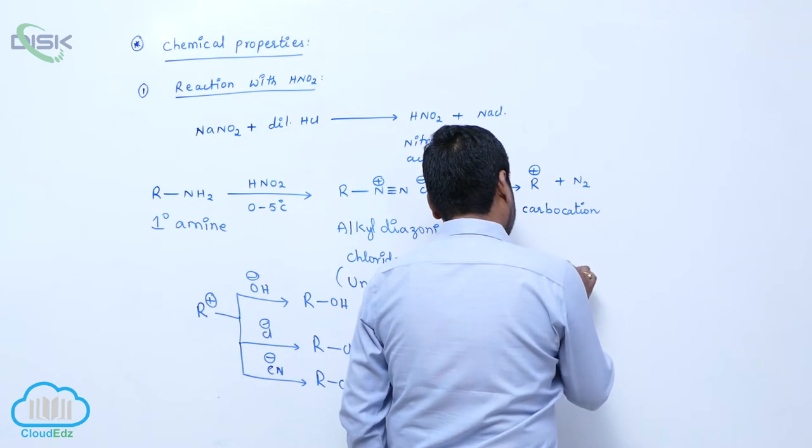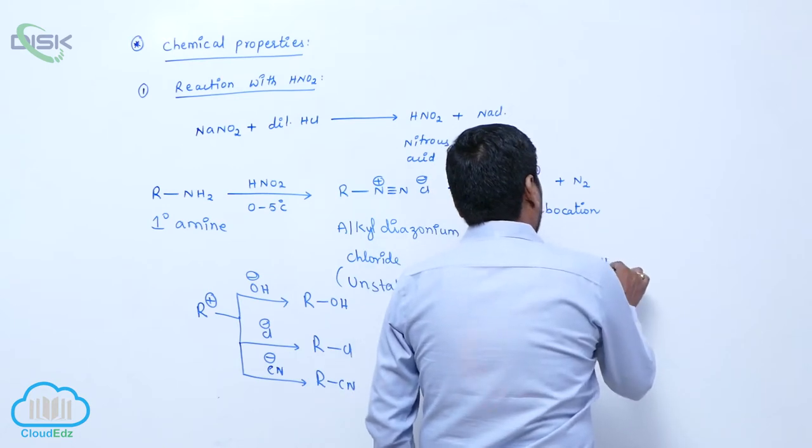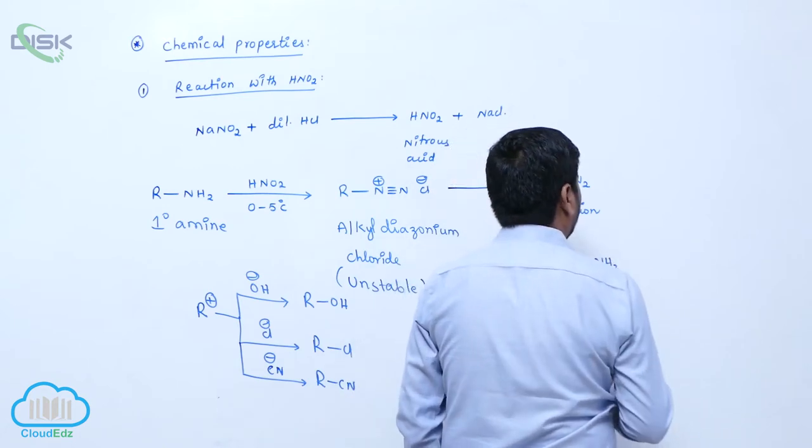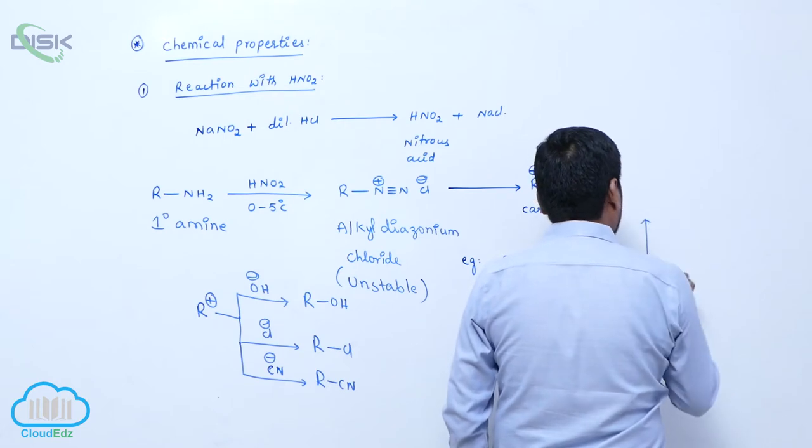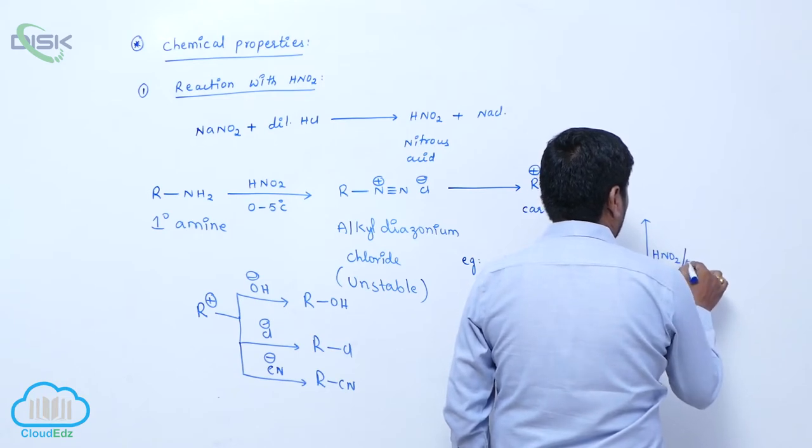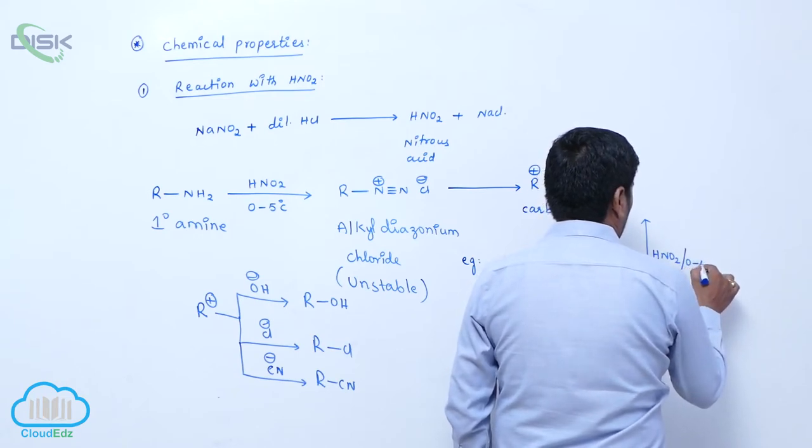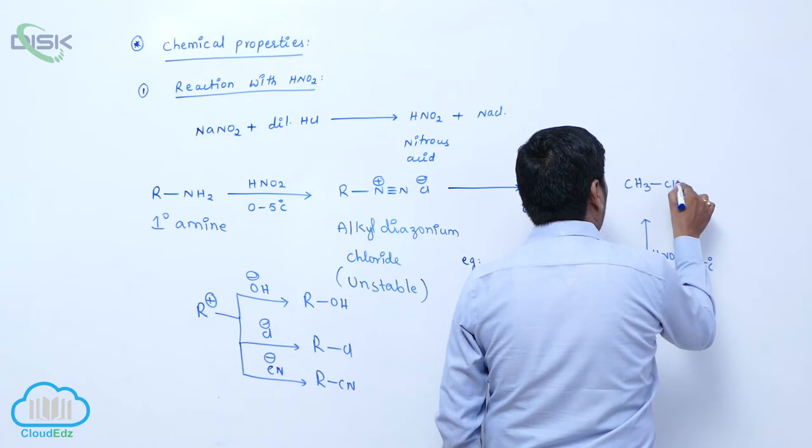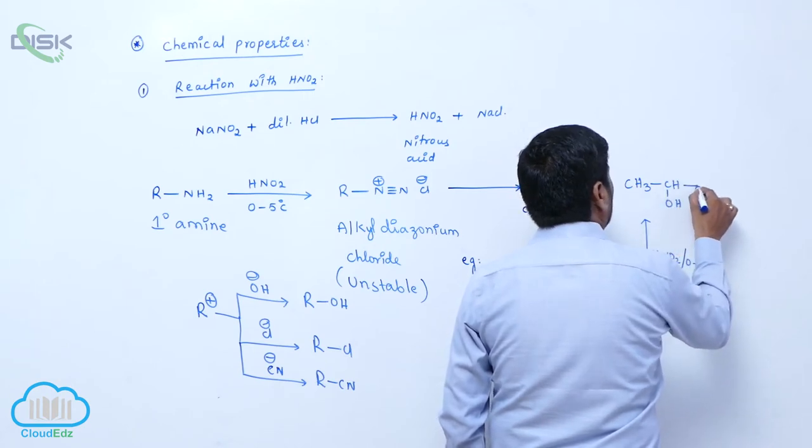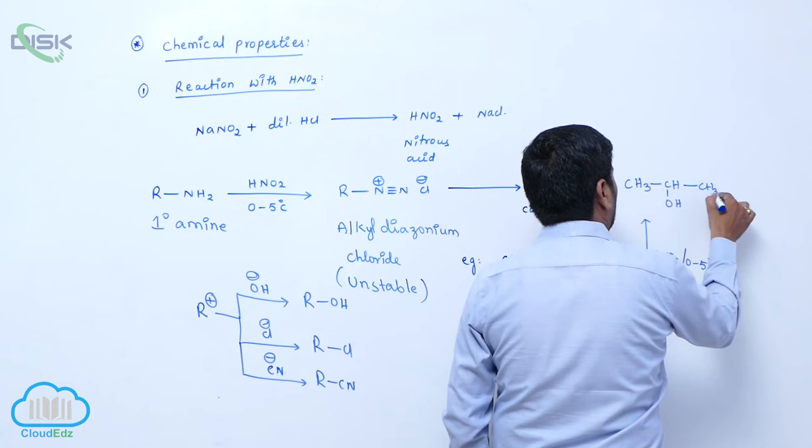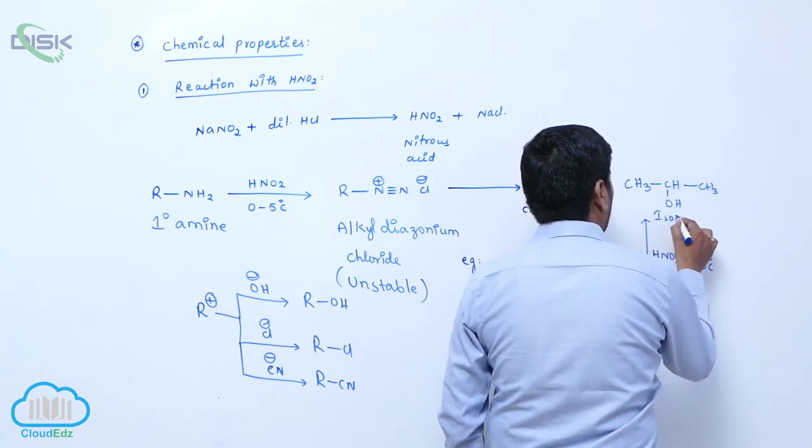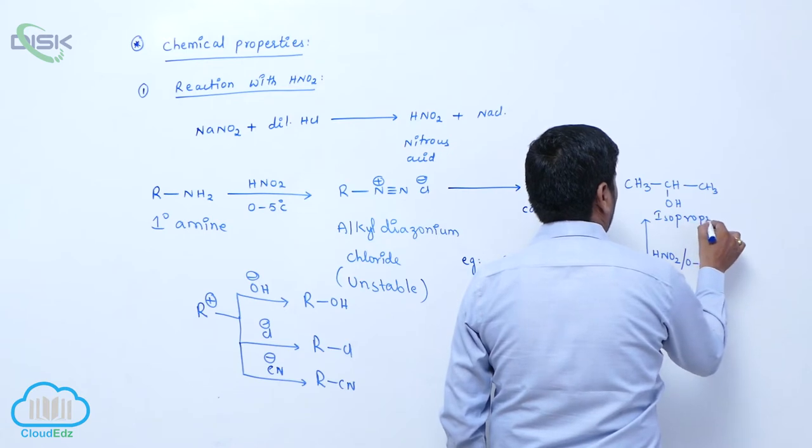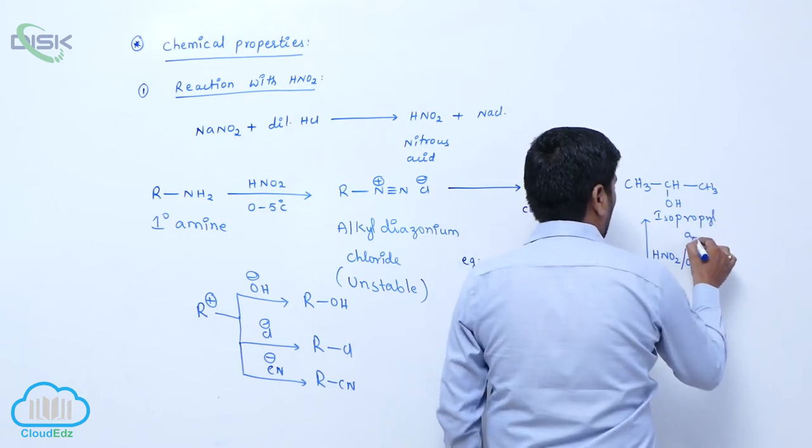For example, N-propyl amine. When N-propyl amine reacts with Nitrous Acid at 0 to 5 degree centigrade, it directly forms 2° alcohol known as Isopropyl alcohol.